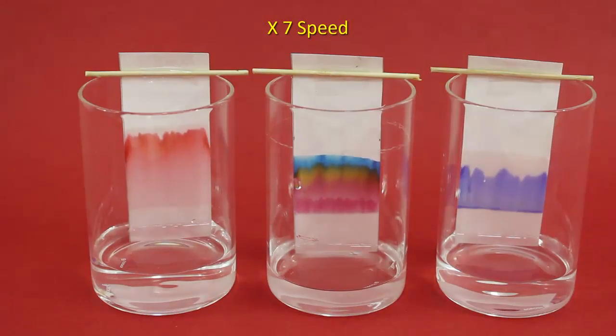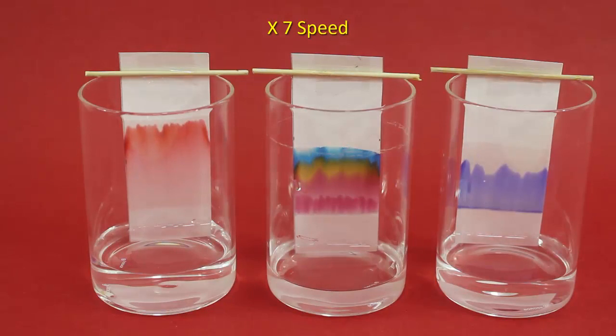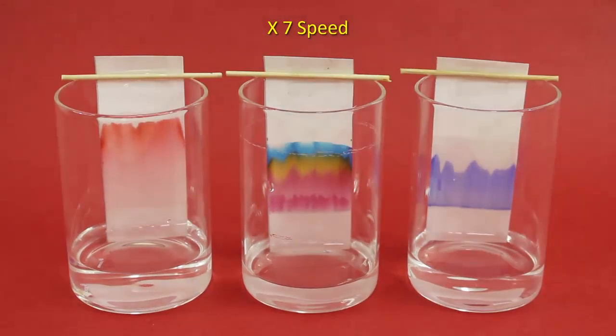The most soluble dyes move furthest on the filter paper, while the least soluble pigments move to the least distance. Similarly, the intermediate ones move according to their respective solubility, thus separating the various components of a color.